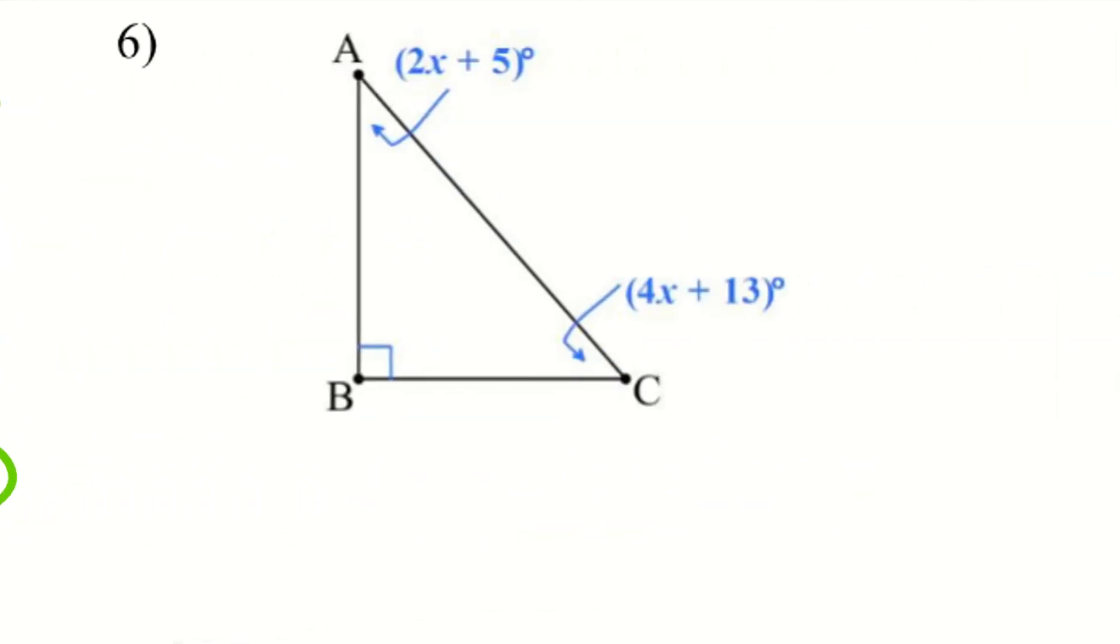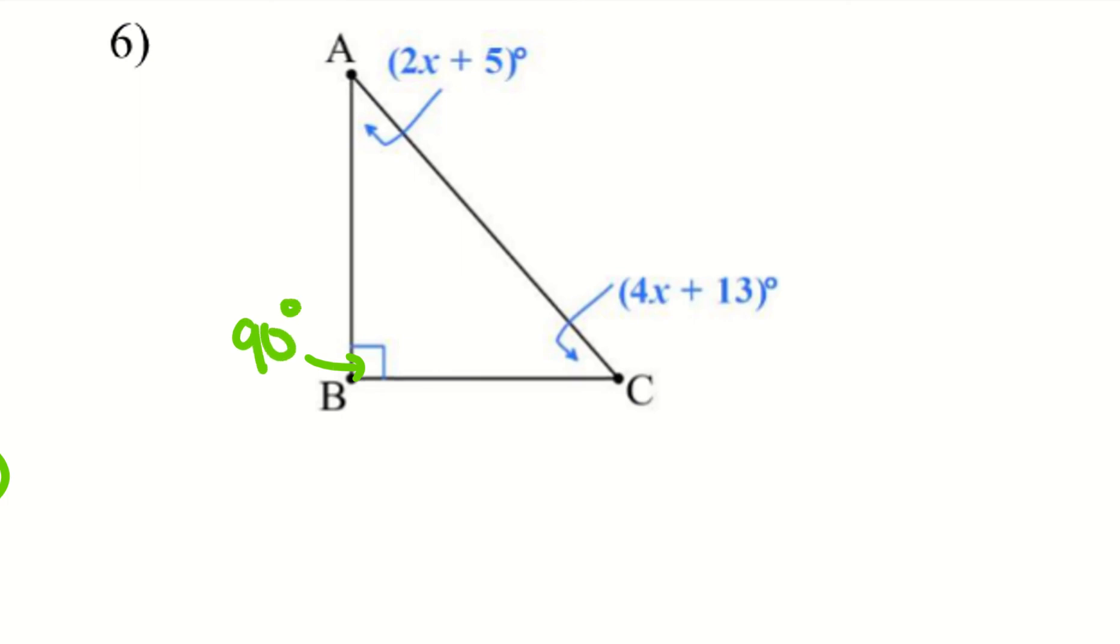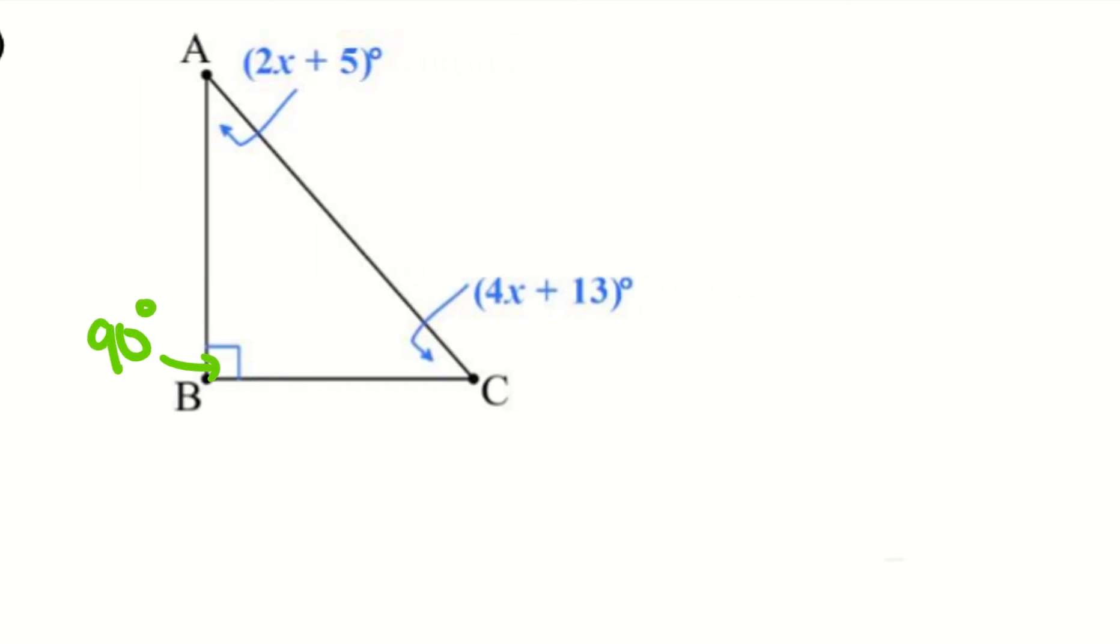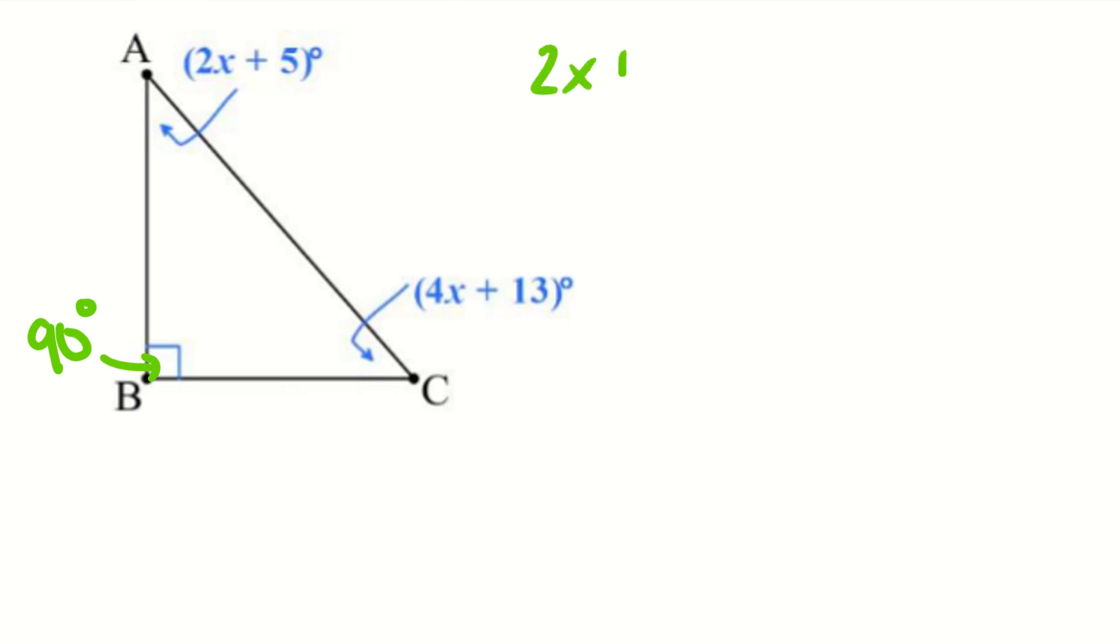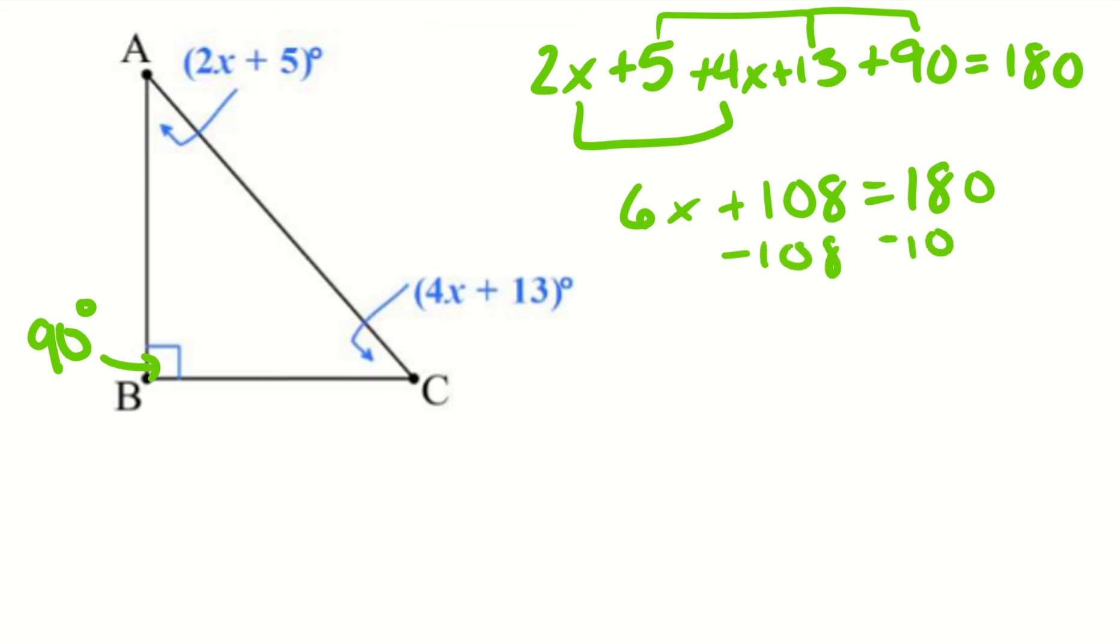Alright, let's take a look at 6. So we have this square thing here again. That does mean 90 degrees. I'm going to take all these angles, add them together, and it equals 180 degrees. So let's go ahead and combine my like terms. We have those two and then these three. So I have 6x plus 108 equals 180. Go ahead and subtract 108 from both sides. I get 6x equals 72. And then divide by 6. x equals 12.